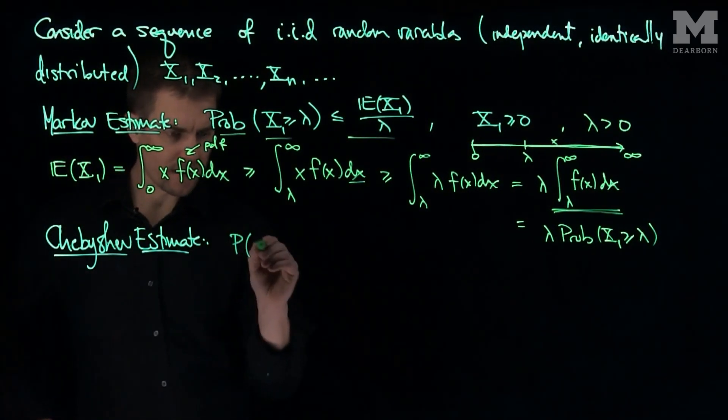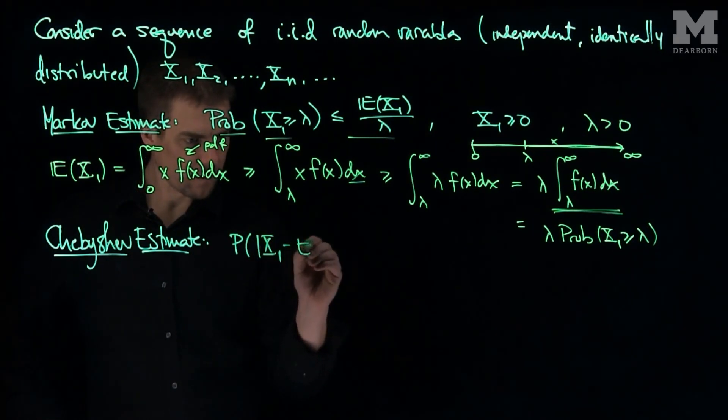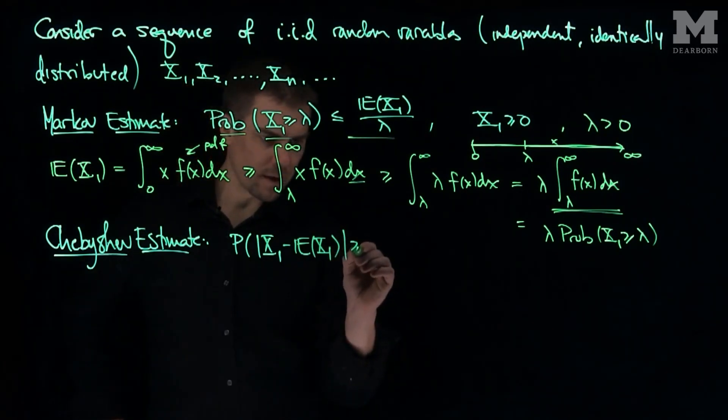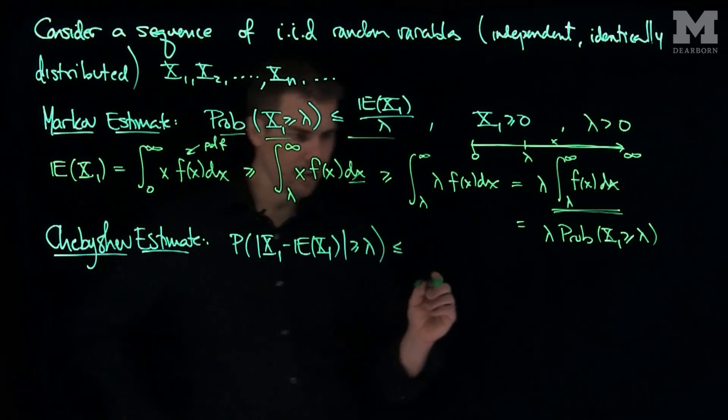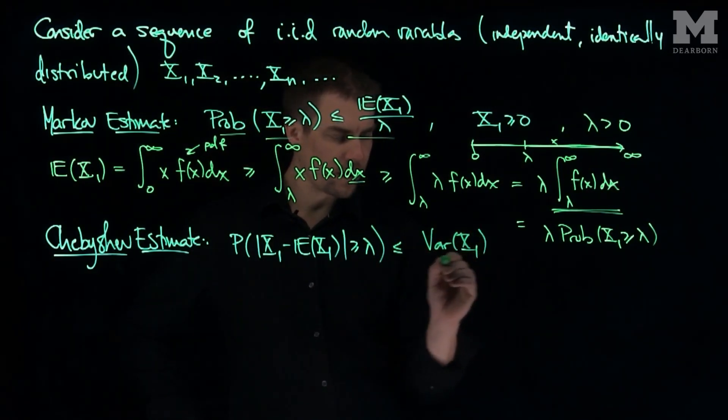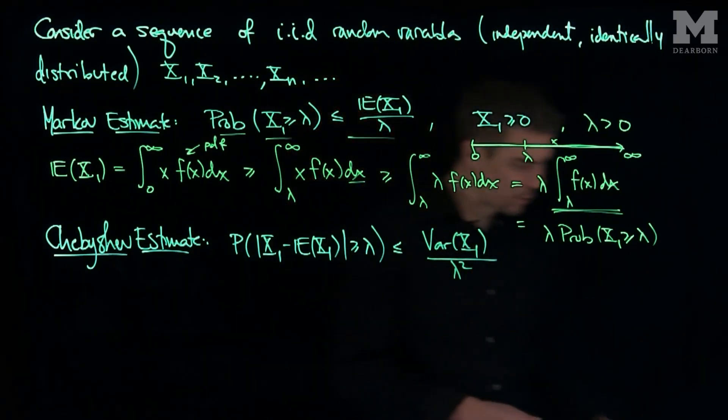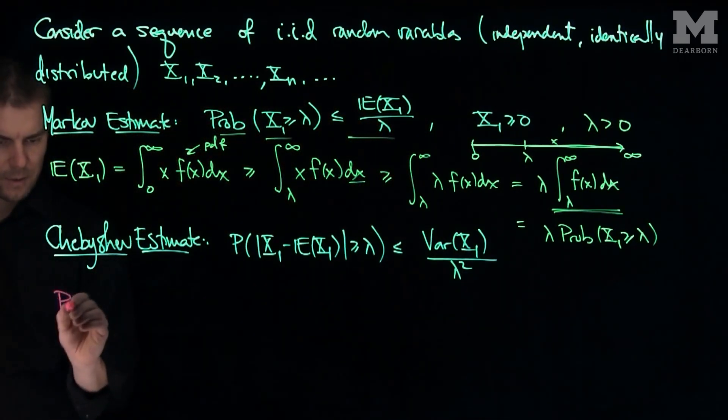So we have the probability that the absolute value of X1 minus its mean is bigger than or equal to lambda is less than or equal to the variance of X1 divided by lambda squared. And so what we'll do is prove this in the following way.